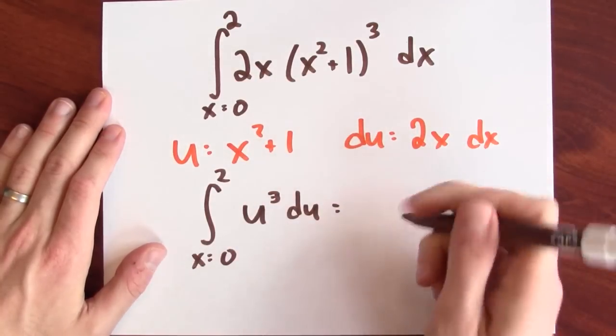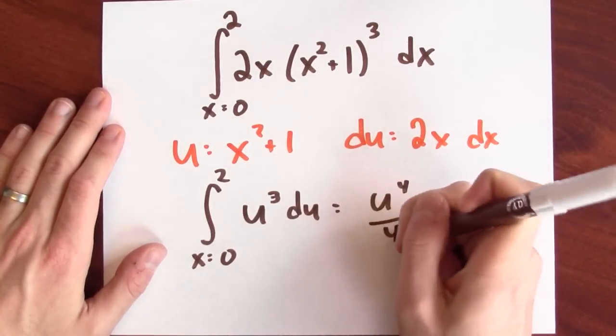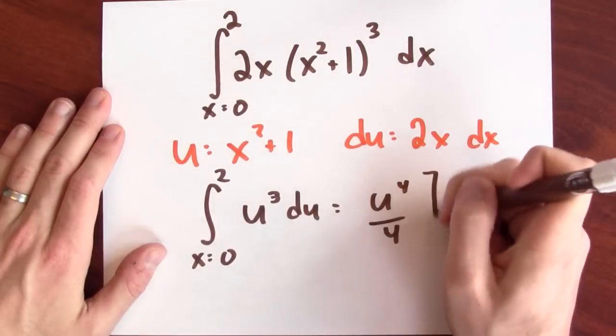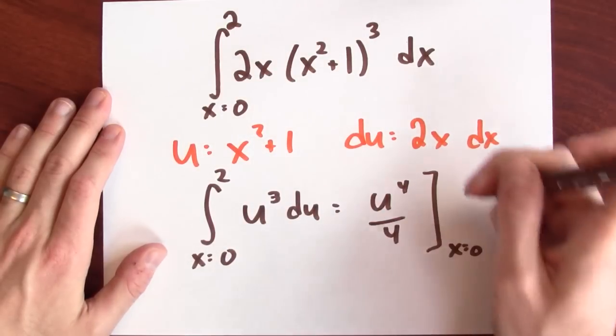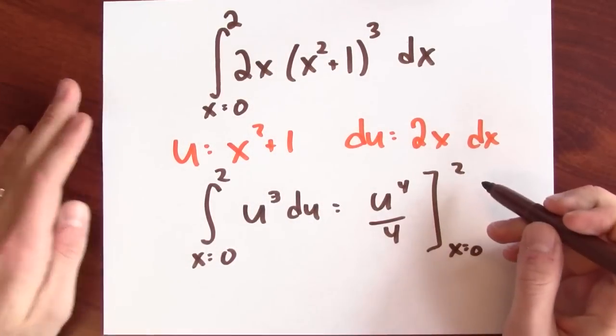And I know an antiderivative of u cubed. It's u to the fourth over 4. And I want to make sure to evaluate this when x equals 0 and 2.